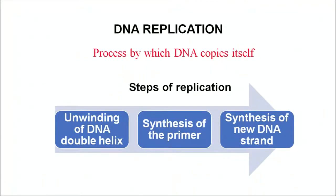This DNA replication is semi-conservative in nature. DNA is made up of 2 strands that are anti-parallel to each other. Semi-conservative means one strand can be used as a template, and based on that template strand, the complementary strand can be built up. Whenever the DNA replicates, the cell receives half DNA which is the older one and half newly synthesized. The strand that serves as a template is the old one, and the newly synthesized strand is the new one. So DNA replication is semi-conservative in nature.